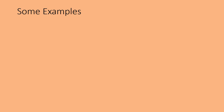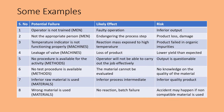Let us see some examples of FMEA. This table depicts how men, machines, methods, and materials are addressed with the details of potential failure, likely effect, and involved risk. For example, if the operator is not trained, the likely effect is a faulty operation. So what is the risk? The risk is inferior output.